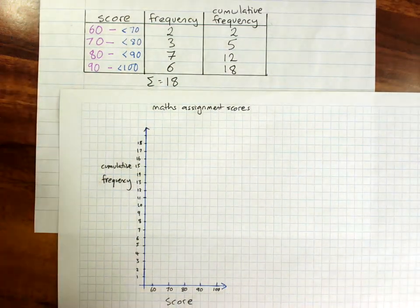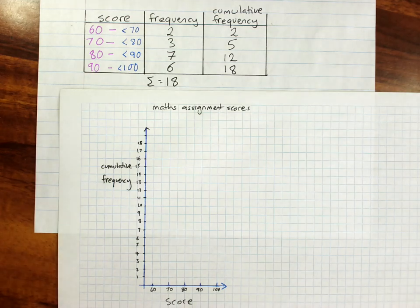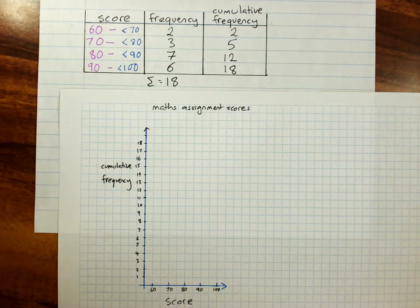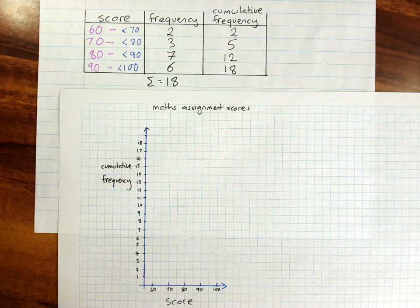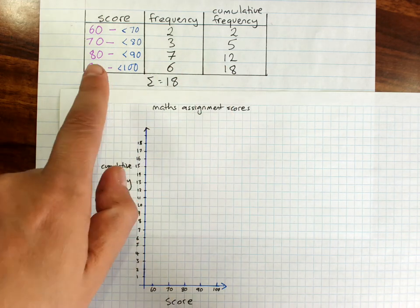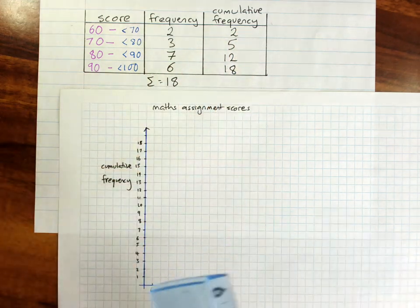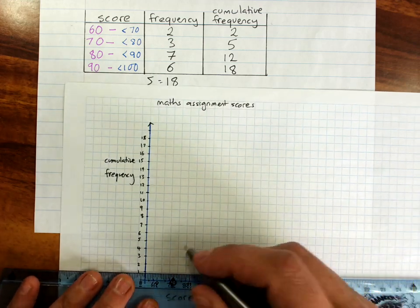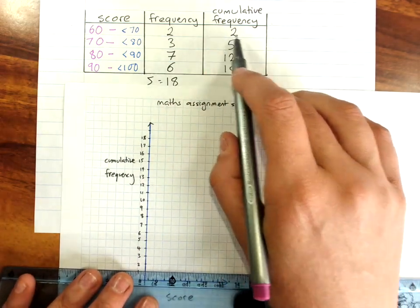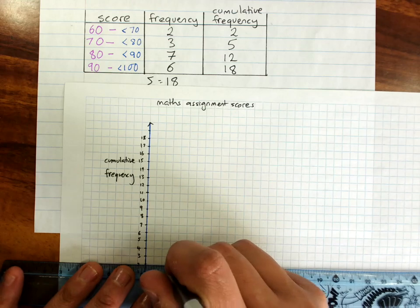Now, as I said, it's easier often to do this if we make a cumulative frequency histogram first. So that means that the scores are on the bottom. The cumulative frequency is going in columns. My cumulative frequency starts at 2.